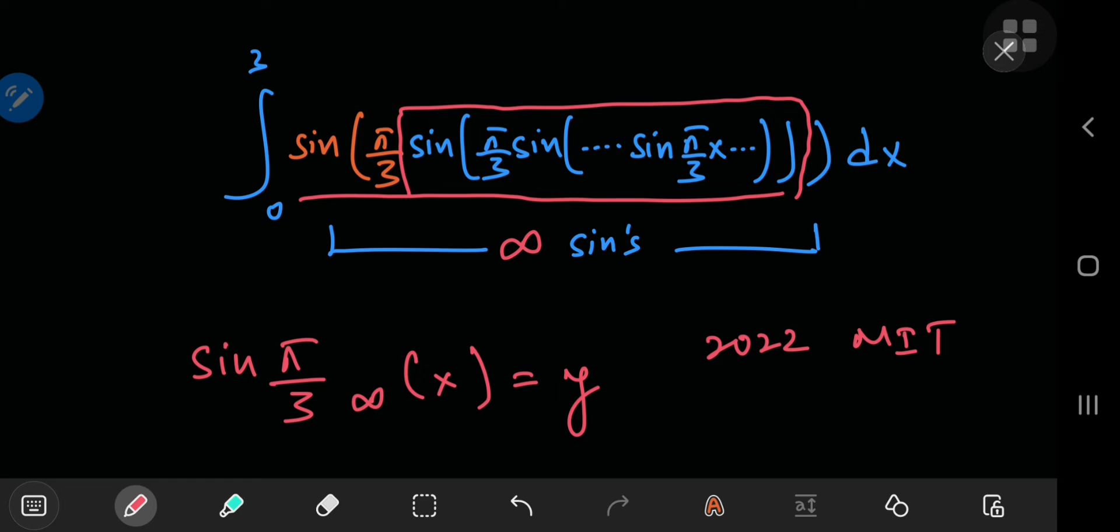In other words, in our notation, all of this is still sin(π/3) sub infinity of x. In other words, this is all still y, and outside you have a sine π/3 operating on it. So the function you're integrating is actually sin(π/3 times y).